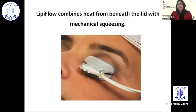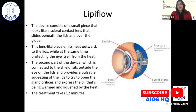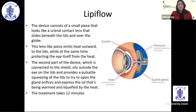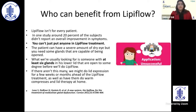A more advanced treatment option combines heat from beneath the lid with mechanical squeezing. The device consists of a small piece resembling a scleral contact lens that slides beneath the lid over the globe, emitting heat outwards, while an external plate delivers pulsatile squeezing on the lids to evacuate meibomian secretions and relieve blocked glands. The entire treatment takes around 12 minutes, using vectored thermal pulse along with pulsatile lid squeezing. Results are typically experienced six to eight weeks after treatment.